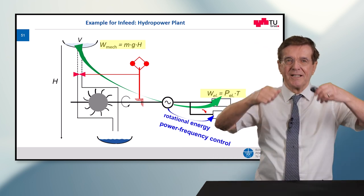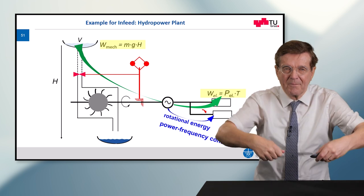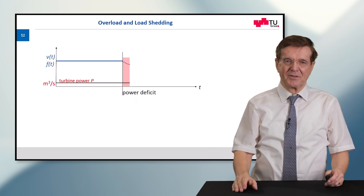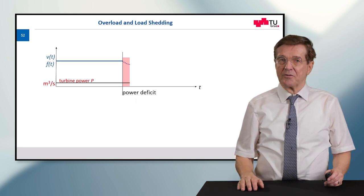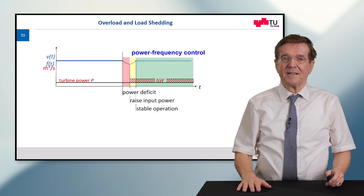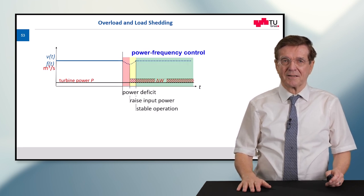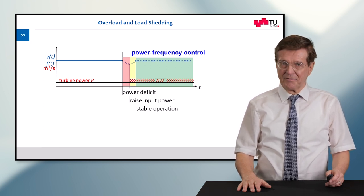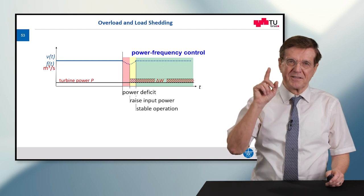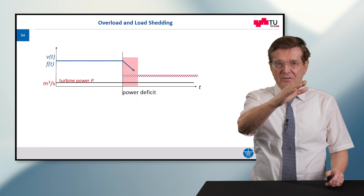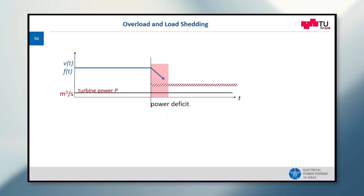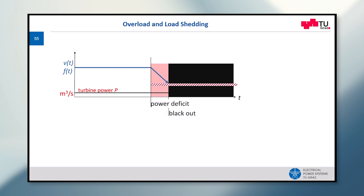If the regulation process works all right, the power frequency control will recover the frequency and the system is stable again. But what happens if this does not work? The frequency goes down and down. When the speed of a process is too low it's no good to continue. If this continues the lower threshold for the under frequency protection of the system will come into effect and will cut out the generating units. This means blackout.